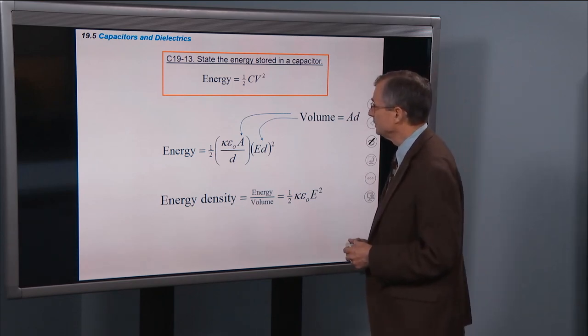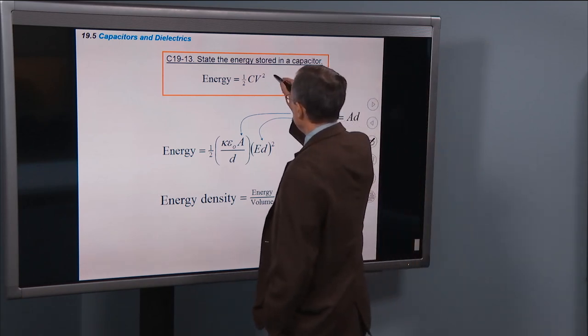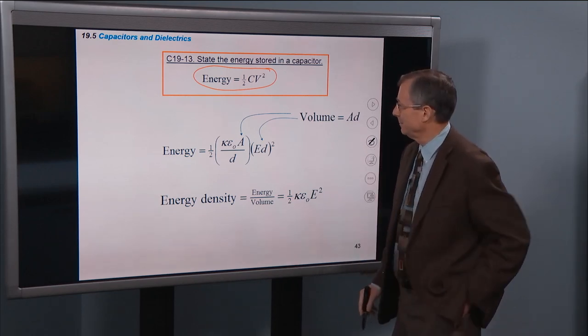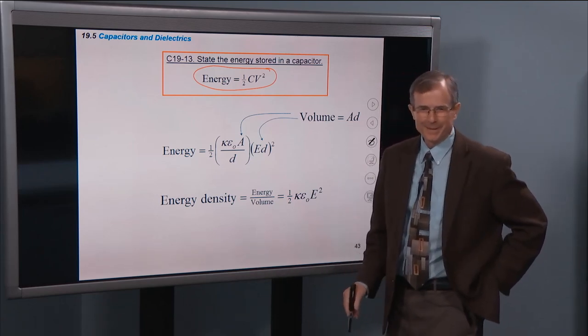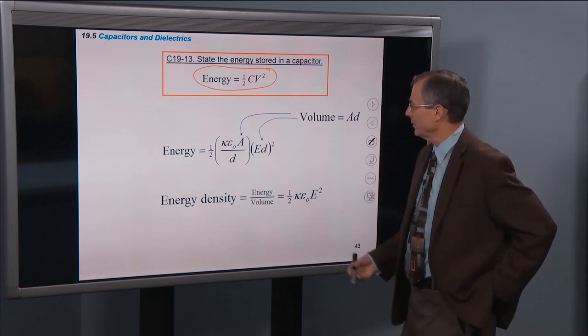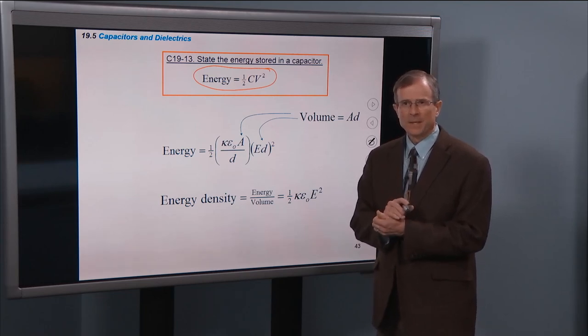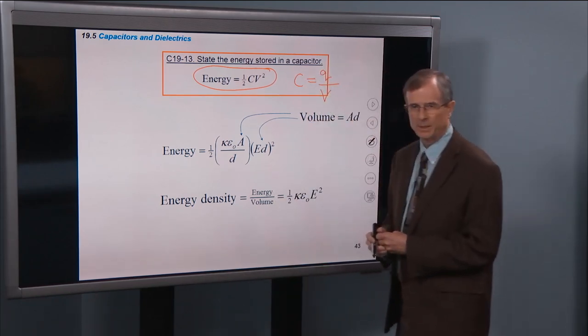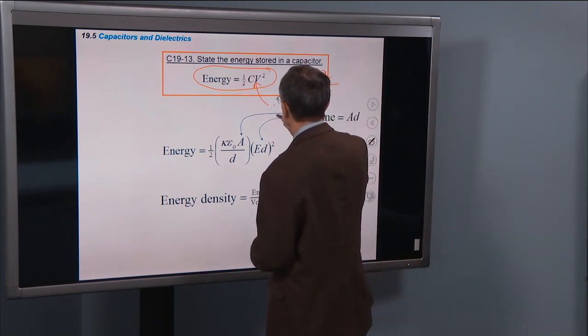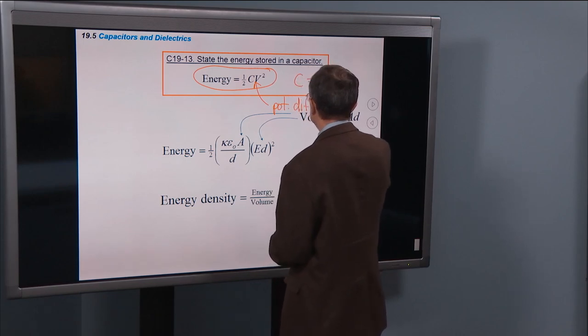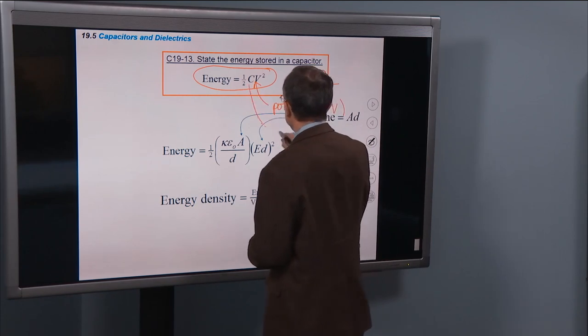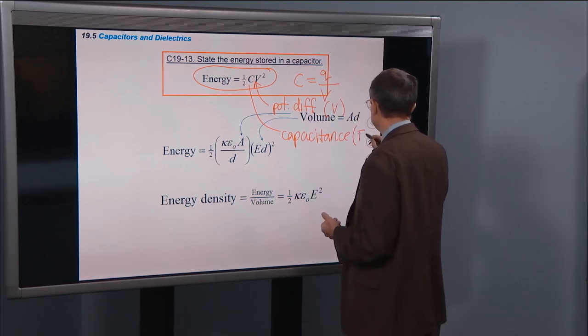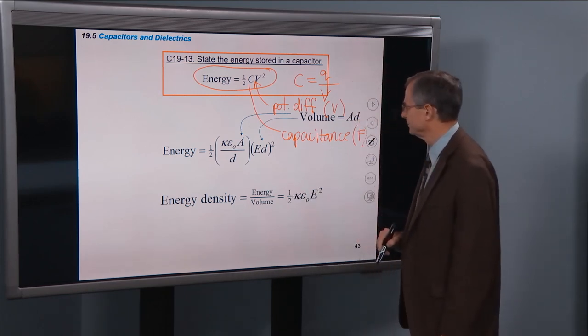State the energy stored in a capacitor. Just a simple statement. It's ½Cv². I don't know how to help you learn that except just to memorize it. Looks like ½mv². You can think about it that way. The kinetic energy where m is replaced by c, however you want to think about it. But that's the energy stored in a capacitor. That can be rewritten in a lot of different ways using the fact that c is q, the charge on the capacitor divided by the potential difference across the capacitor. Here v is a potential difference in volts, c is the capacitance in farads, and ½ is ½.